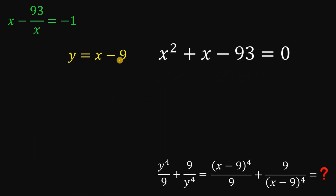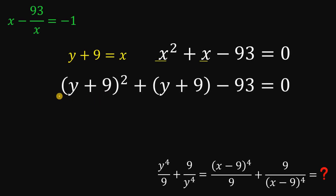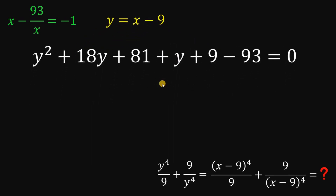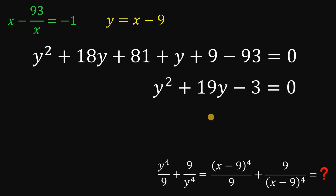Since y equals x minus 9, we can say that x is y plus 9. We can replace x with y plus 9. Doing that, we get: y plus 9 squared, plus y plus 9, minus 93 equals zero. Expanding, we have y squared plus 18y plus 81, then bring down y plus 9, minus 93 equals zero. Combining like terms gives us y squared plus 19y minus 3 equals zero.